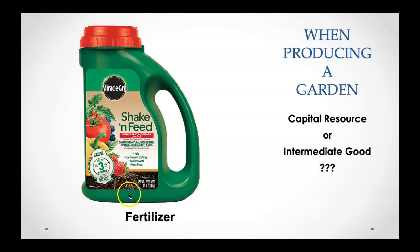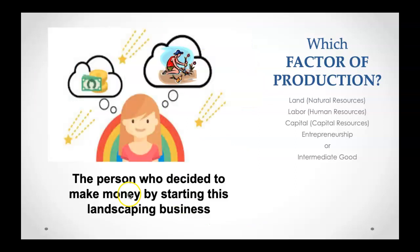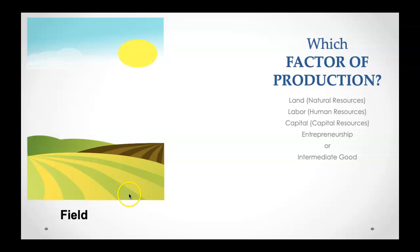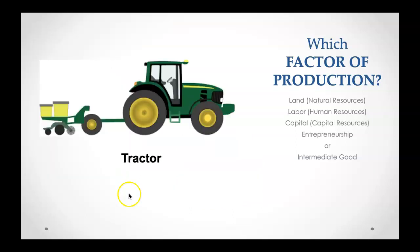We're talking about producing a garden for profit — not just for fun. What about the gardeners hired to work in the garden: which factor of production is that — land, labor, capital, entrepreneurship, or intermediate good? What about the person who decided to make money by starting the landscaping business? What about the field the entrepreneur chose? The overseer of the gardeners? The tractor used in the garden?